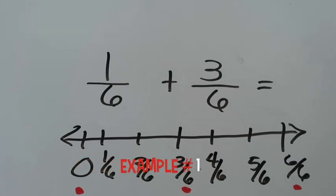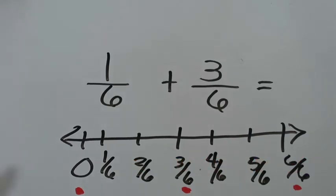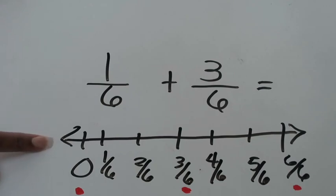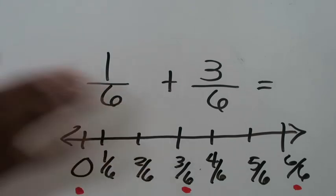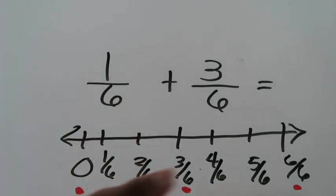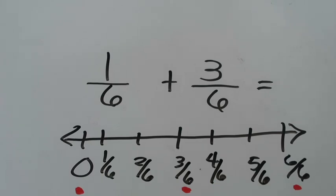In this lesson, we're going to talk about estimating the sums of two fractions and two different strategies you could use. The first strategy involves the use of a number line. I've already drawn this number line out for us. When you are creating your number line, what you want to realize is that the denominator of your fractions is going to help you determine what your number line is going to look like.